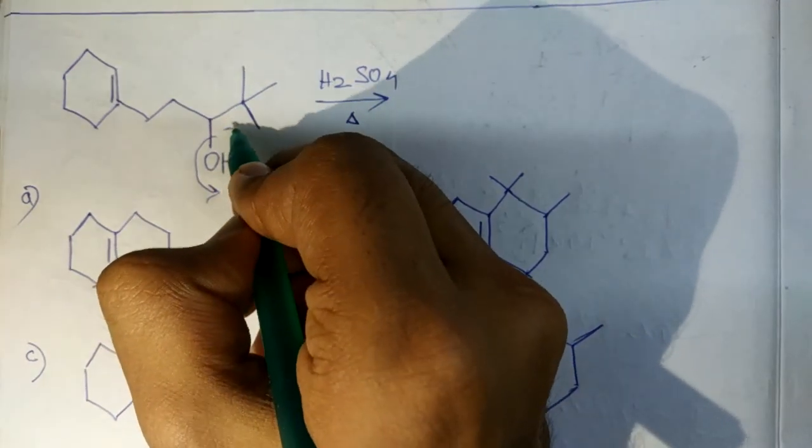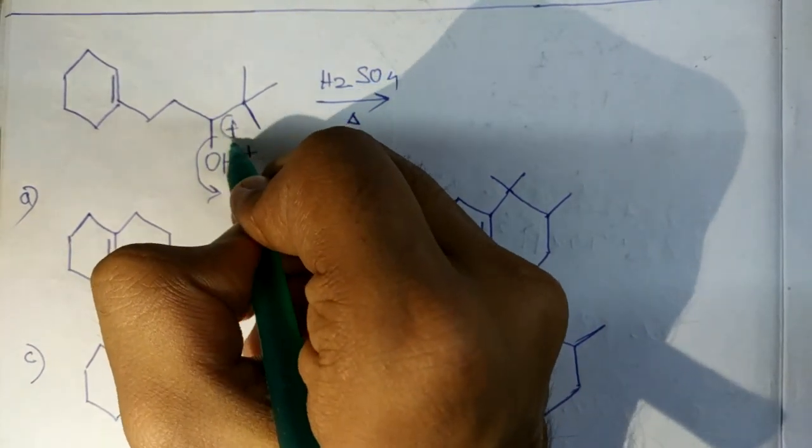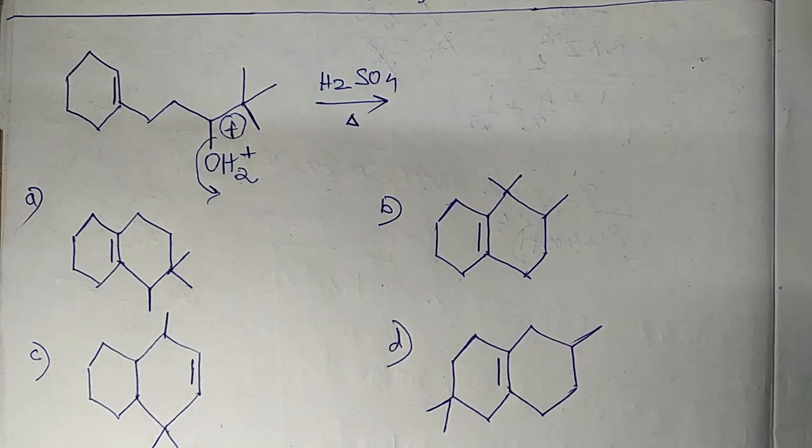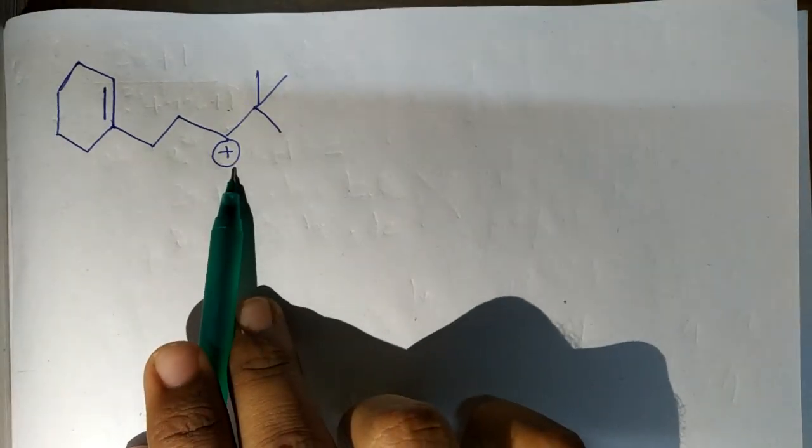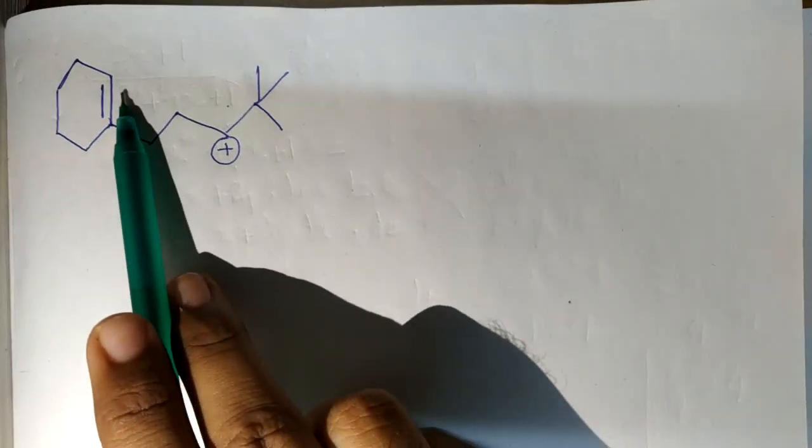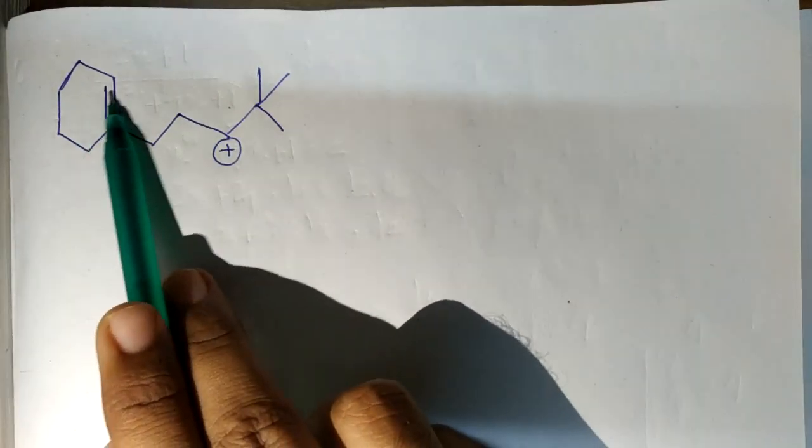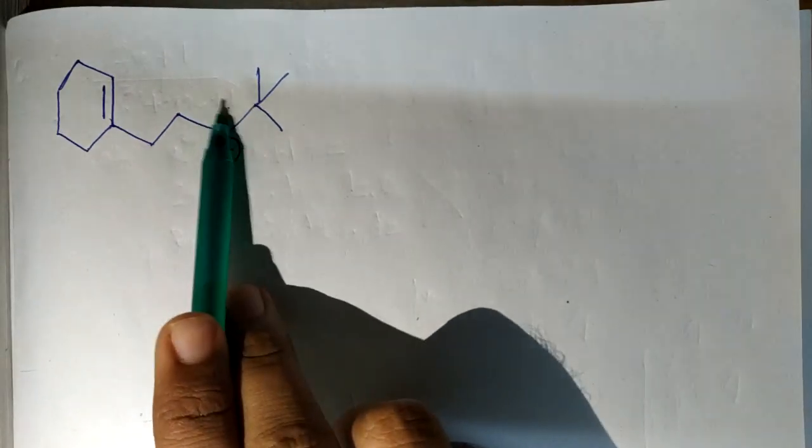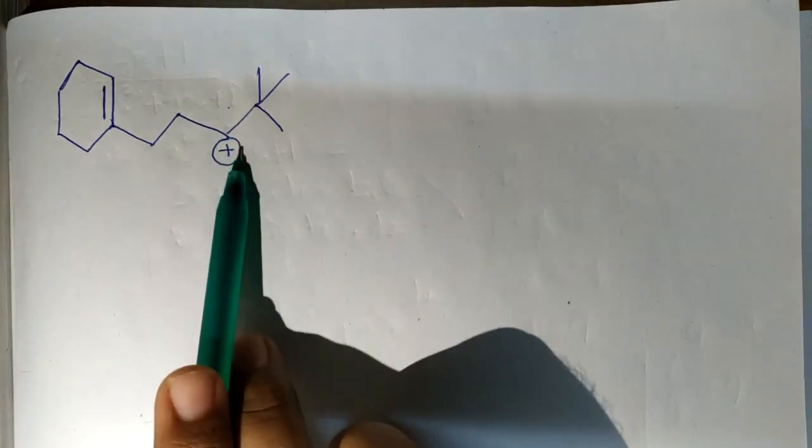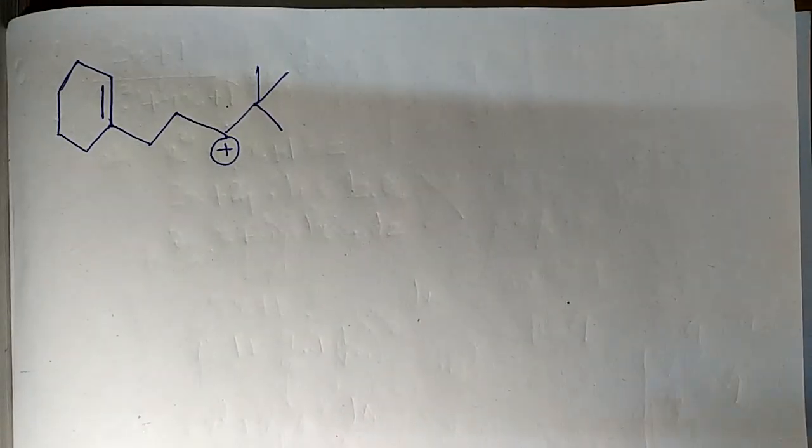The result is the formation of carbocation. Now two cases arise. One: this double bond will give the lone pair, the pi bond here. If it gives a double bond here, a ring will be formed. It is very much confirmed.